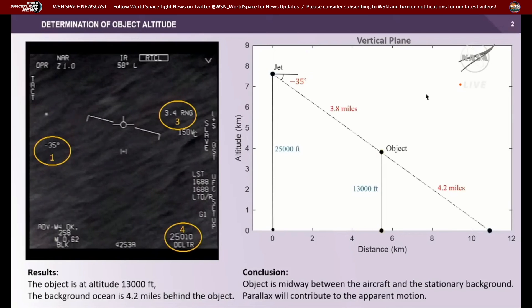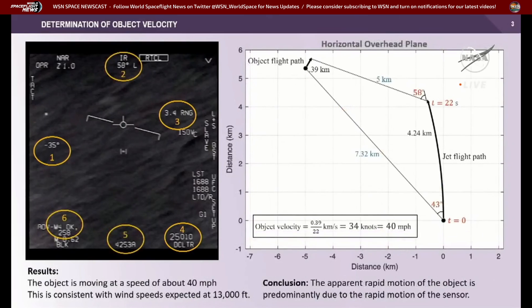We don't have to guess about this. We have enough information on this display to actually reconstruct the encounter. The aircraft is banking about 15 degrees left, and you can compute the approximate radius of curvature of the flight. If you get the bearing and range to the target at two locations with known separation in time, you can figure out how far it moved. In this case, this object moved about 390 meters in 22 seconds, which corresponds to a velocity of just 40 miles per hour — consistent with wind speeds at 13,000 feet.